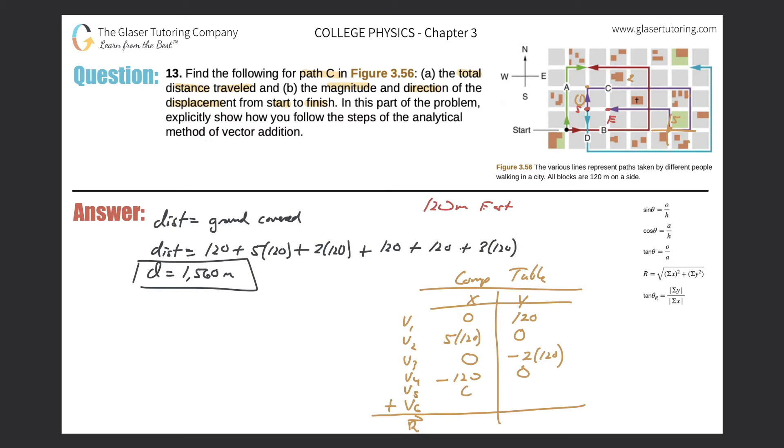So we plug that into the component table. Wonderful. And now last but not least, thank goodness, here's the beginning of the last vector. I notice that it is pointing west or to the left three blocks.